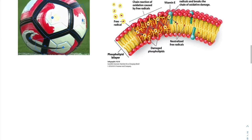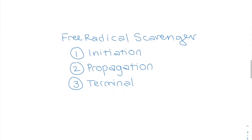So there are three kind of steps, I guess, as a free radical scavenger. The first is initiation. So it's generated from polyunsaturated fatty acids and forms a peroxyl radical.